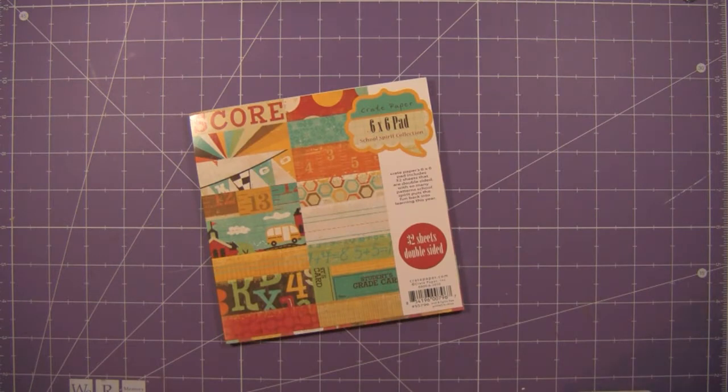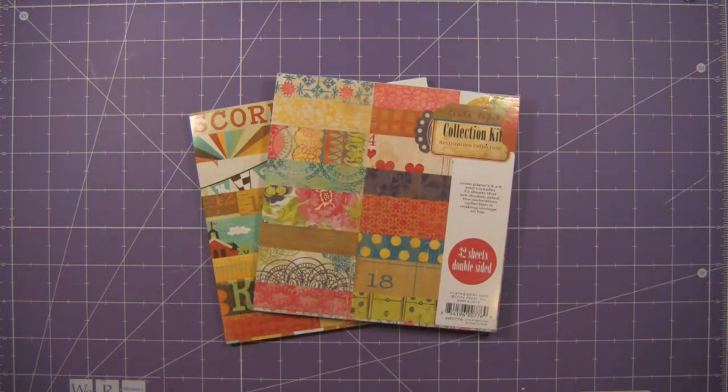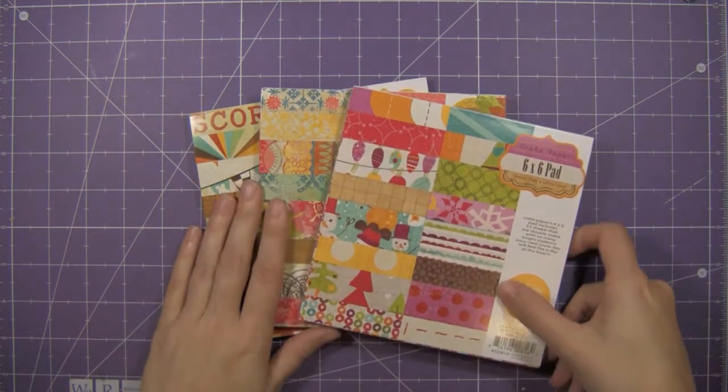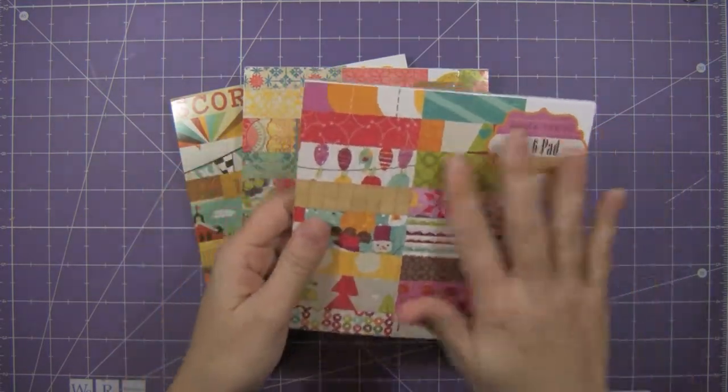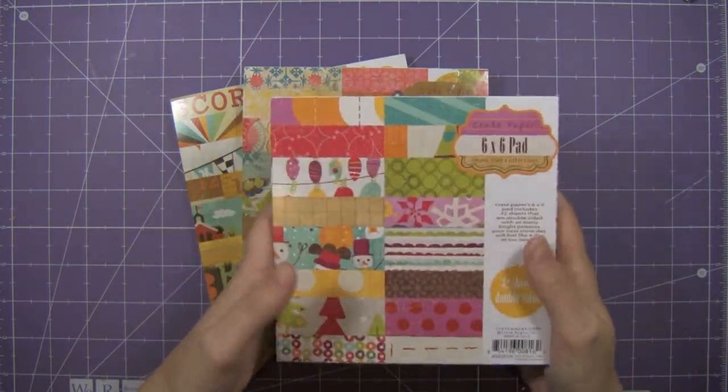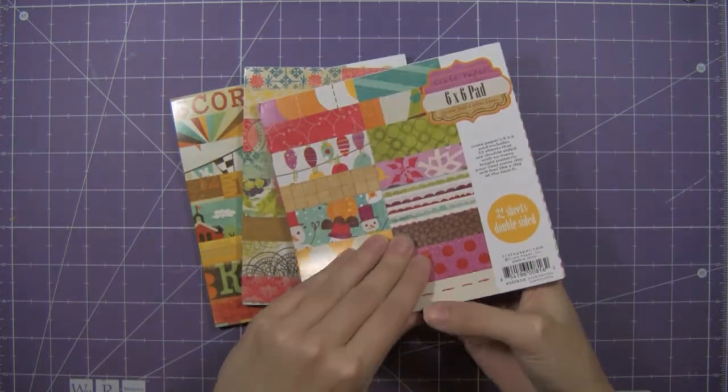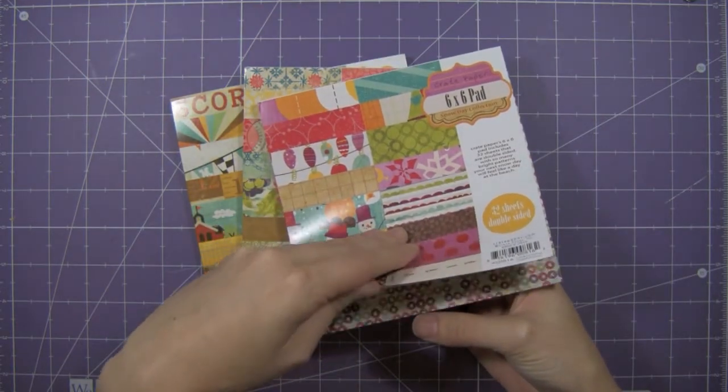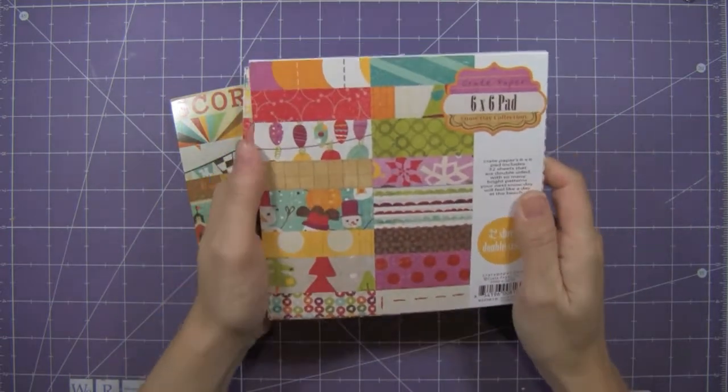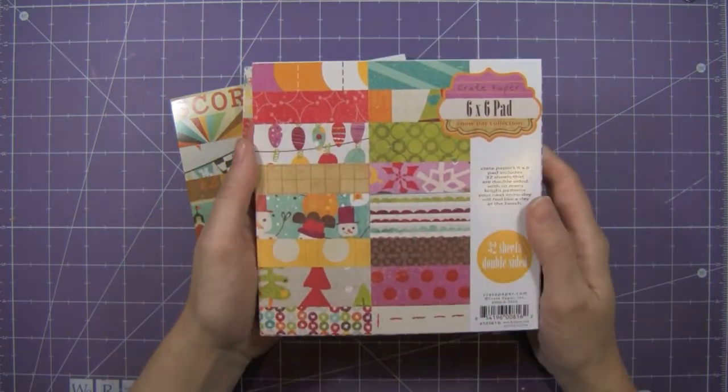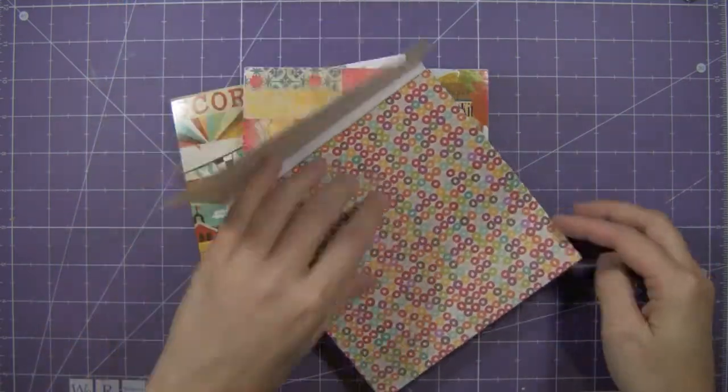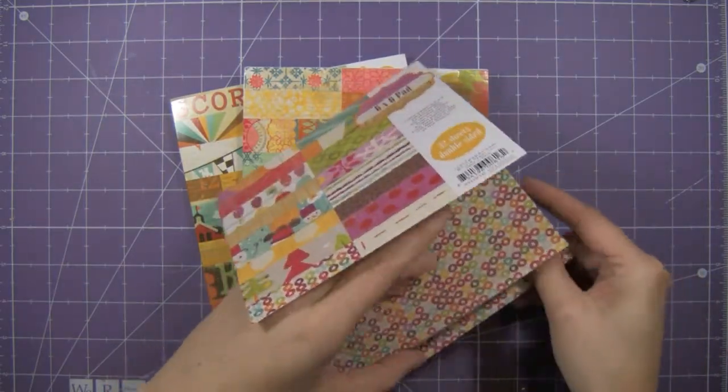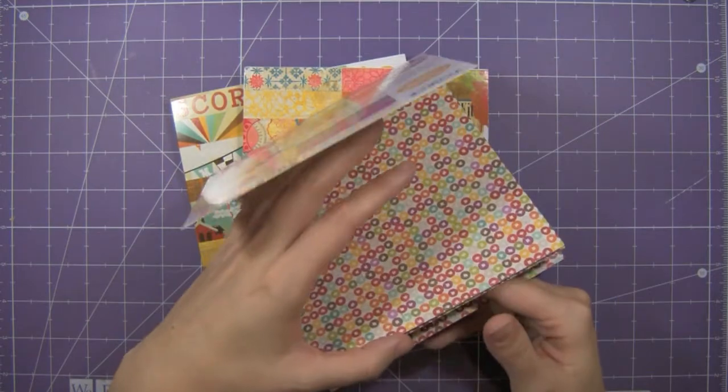The first things I wanted to show you are these new paper pads by Crate Paper, and I have three of the 6x6 pads. I've totally fallen in love with this paper because I like to work in this format, mainly because I do cards. I like the small size and the variety of patterns, but what's neat about Crate Paper and their 6x6 pads is that they took a 12x12 sheet and cut it in fours, so you get four of the same pattern that vary a little bit depending on how the big sheet of 12x12 was.